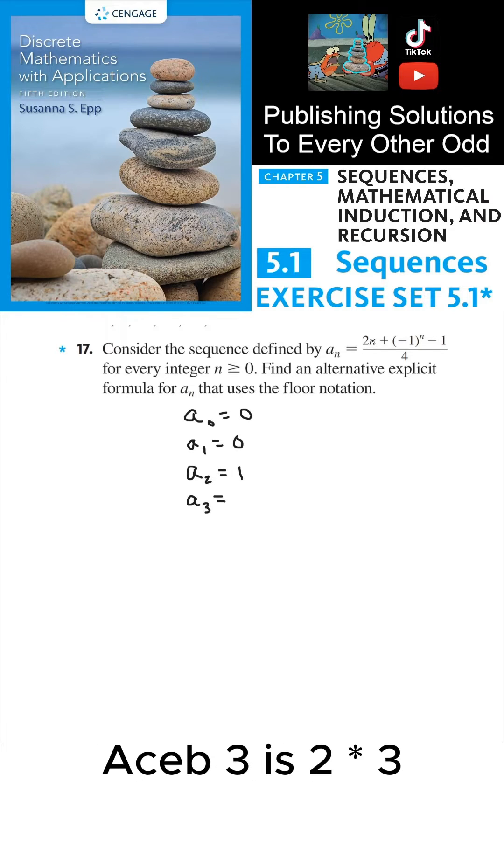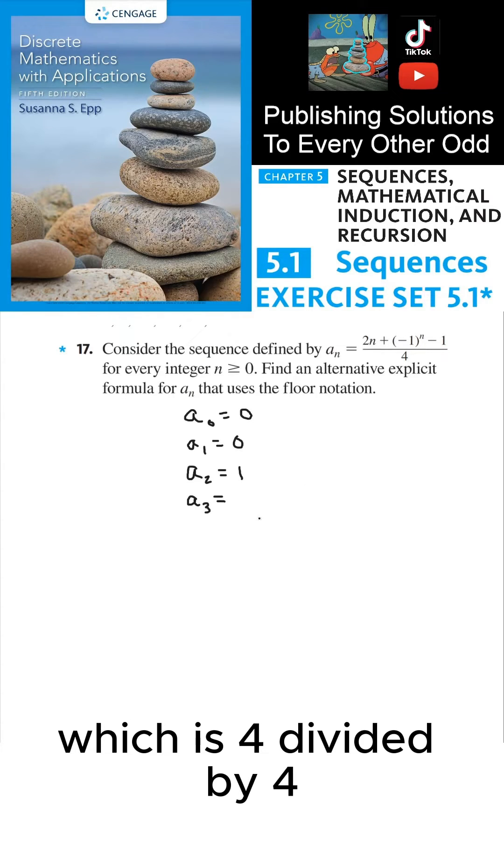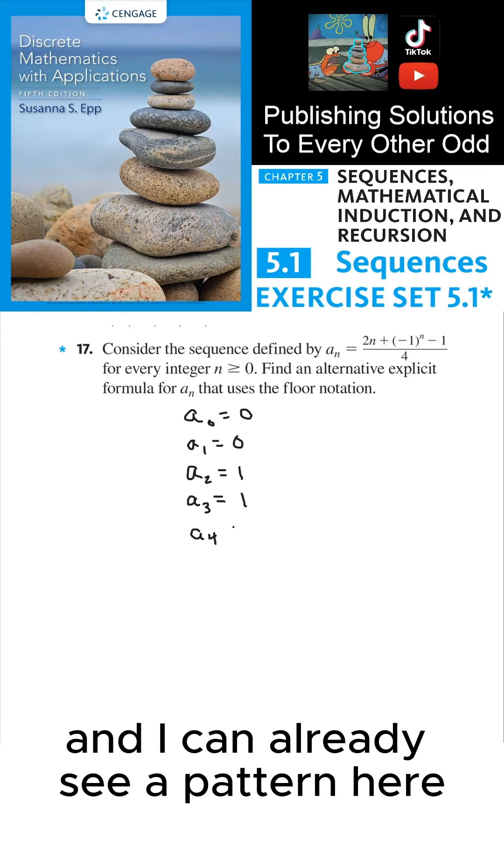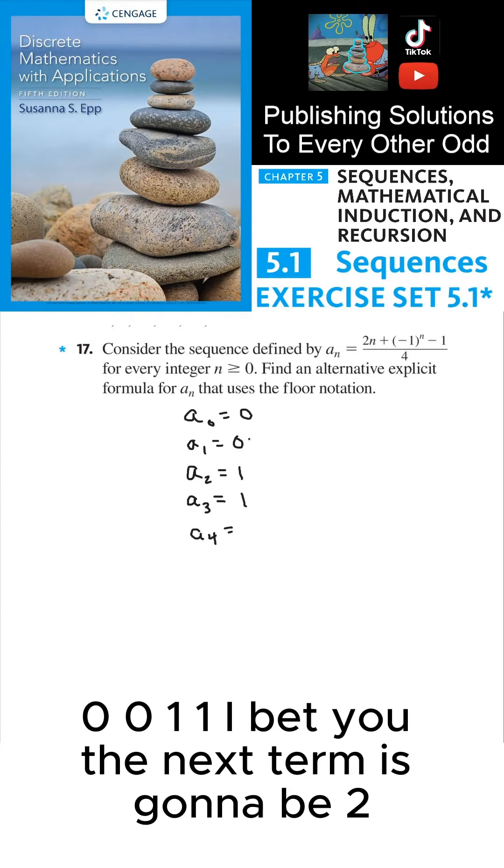a_3 is 2 times 3, which is 6, minus 1, which is 5, minus 1, which is 4, divided by 4, which is 1. And I can already see a pattern here: 0, 0, 1, 1.